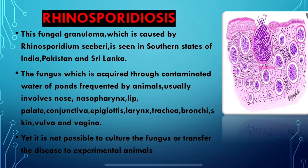This fungus affects the nose and nasopharynx, but it is not confined to these sites. It also affects the lip, palate, conjunctiva, epiglottis, larynx, trachea, bronchi, skin, vulva and vagina.